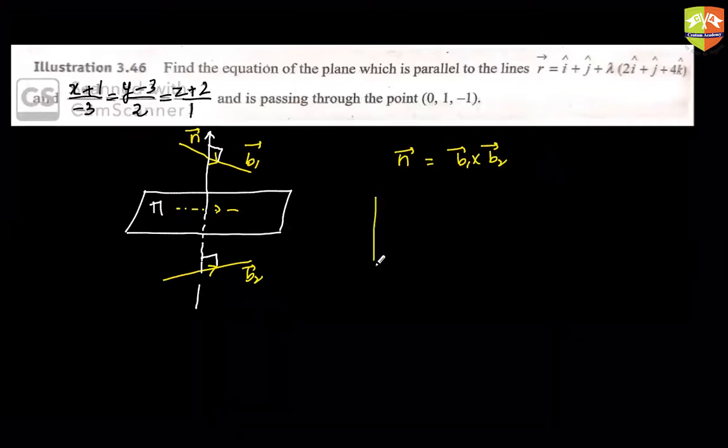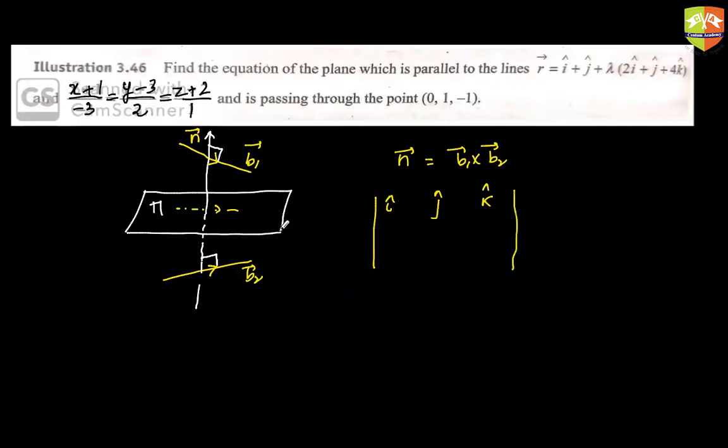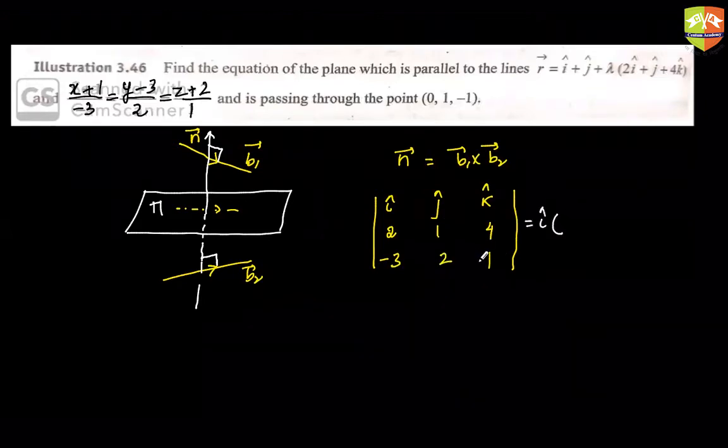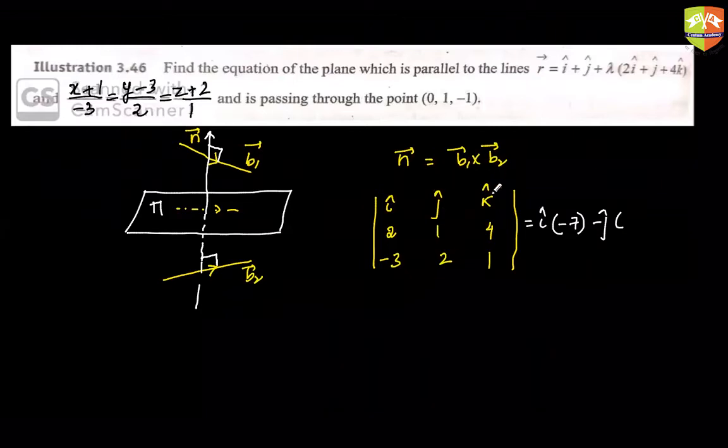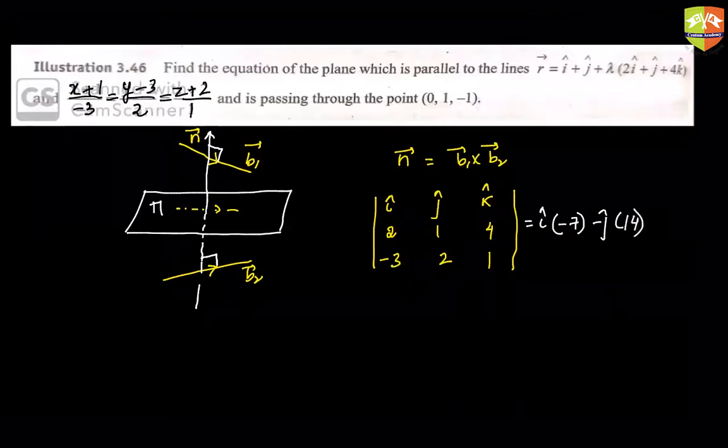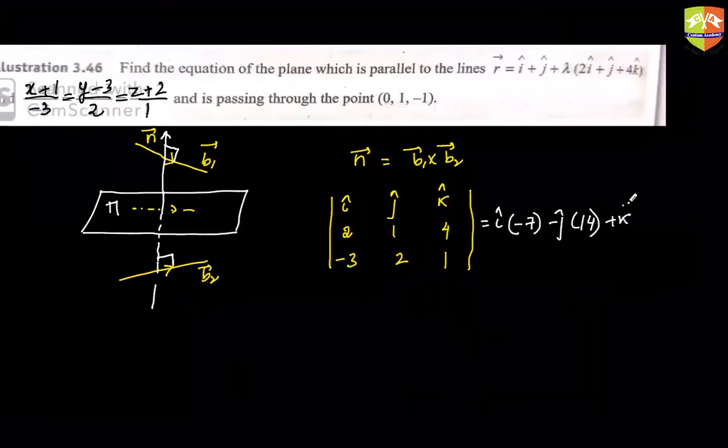So can I say in order to get the equation of this plane, I would need the direction of the normal to the plane. And this normal will be simultaneously perpendicular to the direction of both the lines. So let's say this direction is b1 direction and this direction is b2 direction. So can I say this normal would be in the direction of b1 cross b2. So let's find b1 cross b2 by using our vector product. So components of b vector will be 2, 1, 4. Components of b2 vector will be -3, 2, 1. Let's expand it. So 2 minus 8, sorry, 1 minus 8 is -7, minus j. That would be 2 plus 12, which is going to be 14, and plus k, 4 plus 3, which is 7.